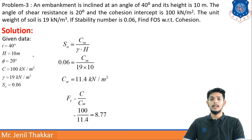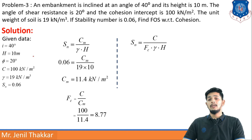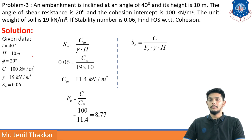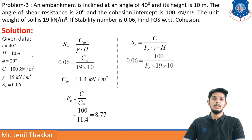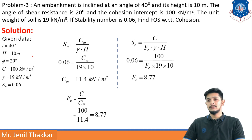Alternatively, using the formula SN = c / (FC × γ × H), where SN, c, γ, and H are known, FC can be solved directly. Substituting SN = 0.06, c = 100, γ = 19, H = 10 gives FC = 8.77, same as before. This is a shorter approach to solving these numericals.